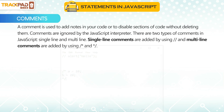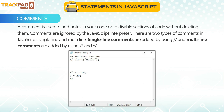A comment is used to add notes in your code or to disable sections of code without deleting them. Comments are ignored by the JavaScript interpreter. There are two types of comments in JavaScript: single line and multi-line. Single line comments are added by using double slash (//) and multi-line comments are added between slash-asterisk and asterisk-slash (/* */).